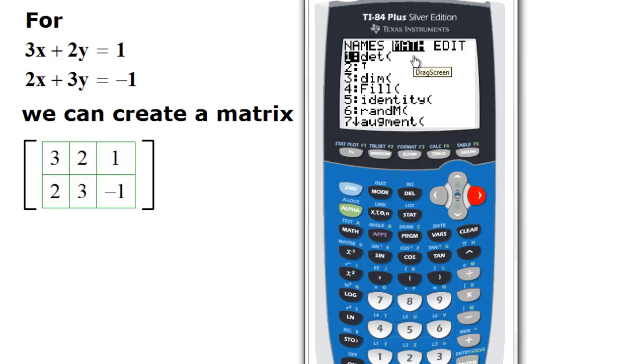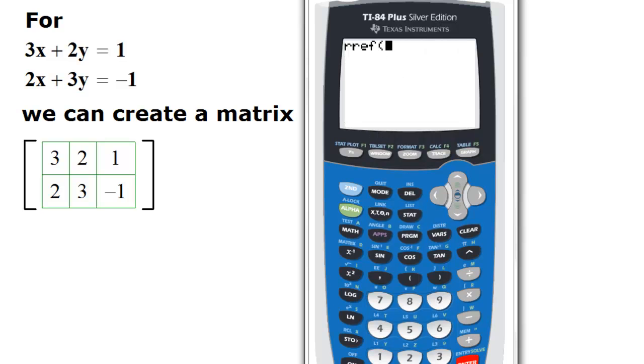So what we need is the row reduced echelon form. So here is the row reduced echelon form. So you enter it.